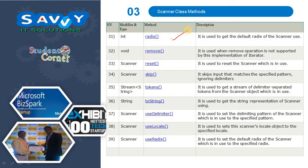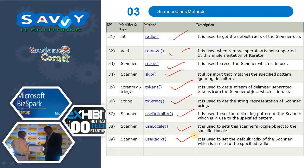Radix: used to get the default radix of the scanner. Remove: used when remove operation is not supported by this implementation of iterator. Reset: used to reset the scanner which is in use. Skip: skips input that matches the specified pattern, ignoring delimiters. Tokens: used to get a stream of delimiter-separated tokens from the scanner object which is in use. ToString: used to get the string representation of the scanner. UseDelimiter: used to set the delimiting pattern of the scanner to the specified pattern. UseLocale: used to set the scanner object to the specified locale. UseRadix: used to set the default radix of the scanner to the specified radix.